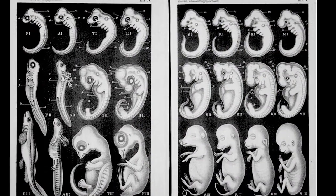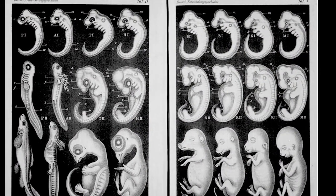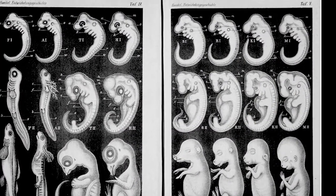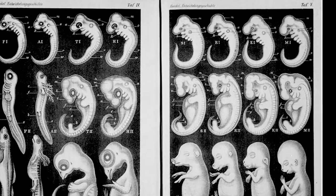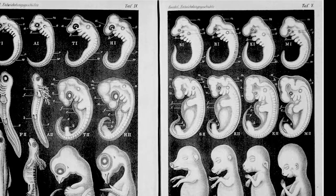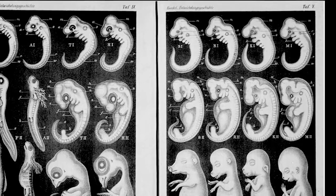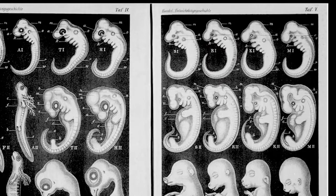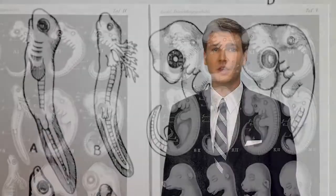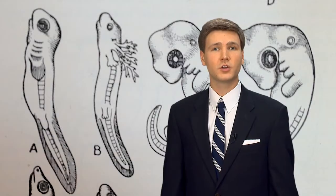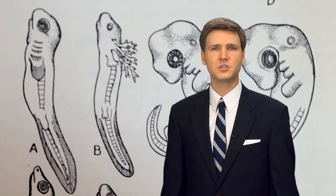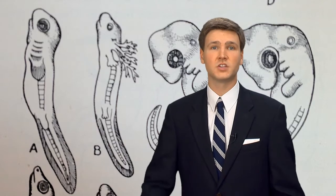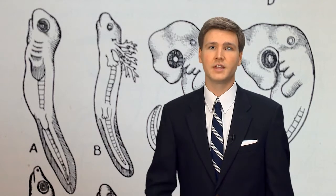Noticed in his illustrations, in the first stages of all embryonic development are indications of gill slits, even in humans. That theory is known as biogenetic law — the idea that the embryos of all complex animals go through the same stages of development as those of its evolutionary ancestors.